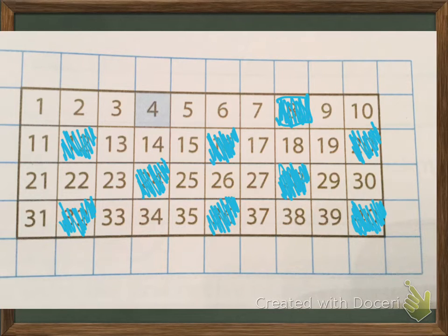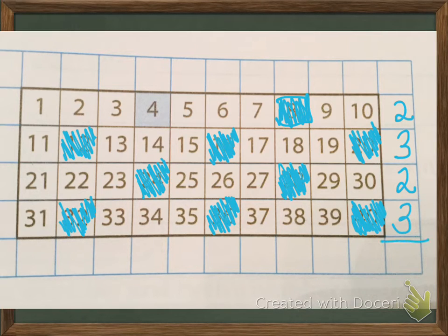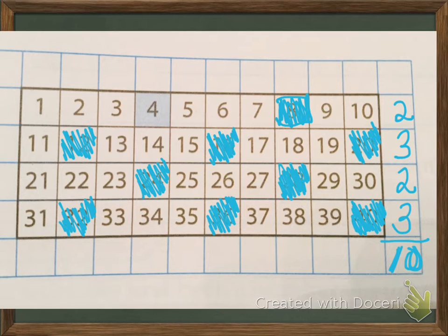Because every 4th square is blue, I've shaded them in. Now let's go back and count. There are 2 blue squares in the first row, 3 blue squares in the second row, 2 in the third row, and 3 in the fourth row. Altogether, I add them up and I have 10 blue squares. Which squares are blue? 4, 8, 12, 16, 20, 24, 28, 32, 36, and 40.